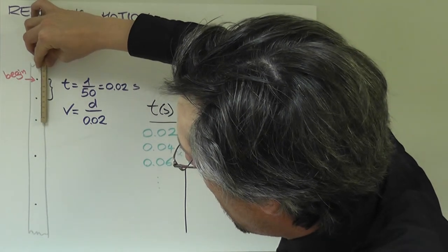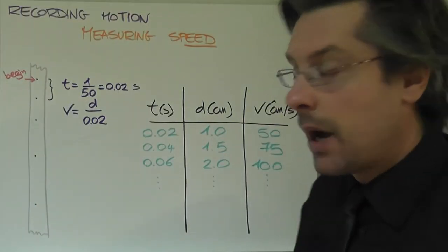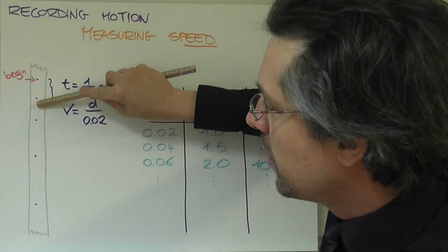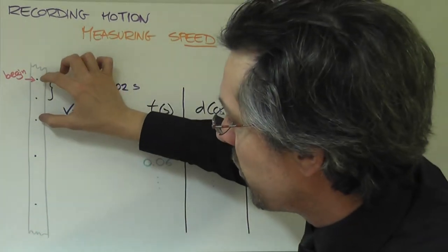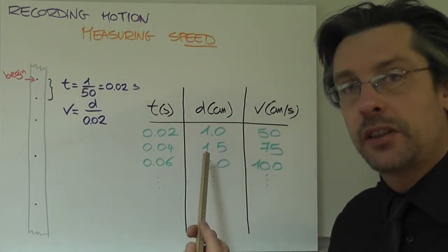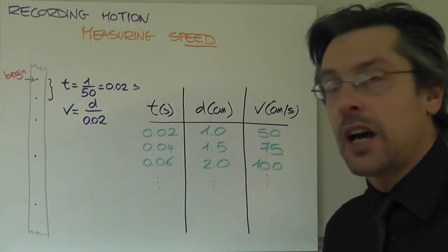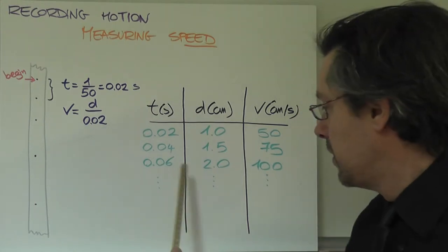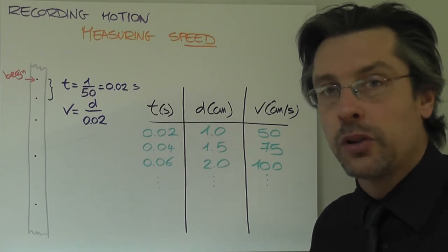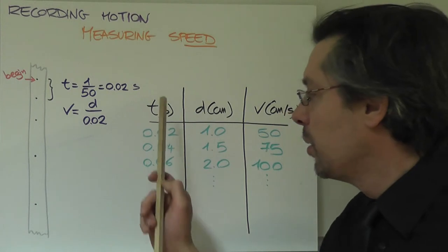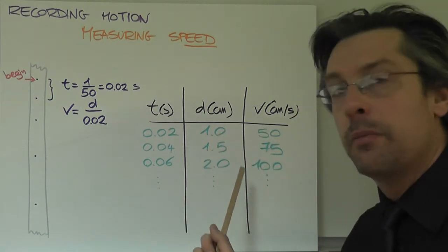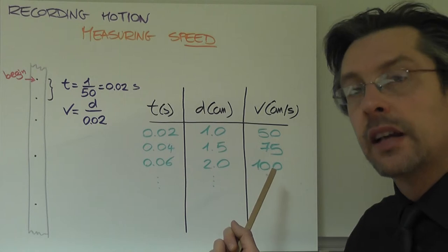Then I look at the second interval. Mind you, I'm not measuring the distance always from the beginning dot, I always measure the distance between two consecutive dots, so I'm not measuring now the distance from here to here, but from here to here. Let's say it turns out to be 1.5 centimeters. Again I do my math, it comes out that the speed is 75 centimeters per second. And we can continue. In this way we can have a faithful record of what was the movement of our trolley. We have the times, we have the distance traveled and we can work out the speed at different times. And you already can see with the numbers I made up that this object is accelerating.